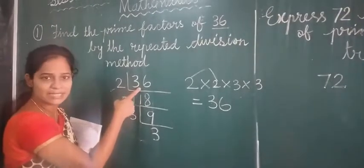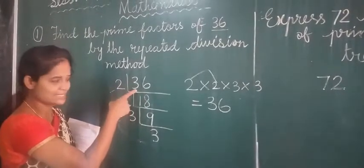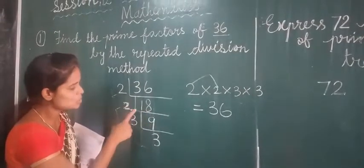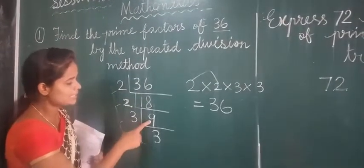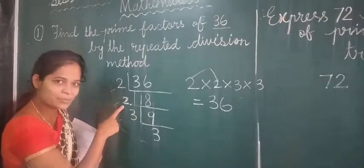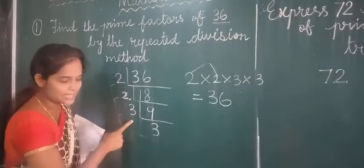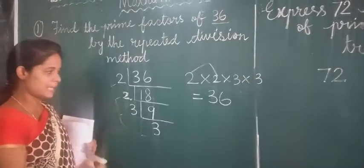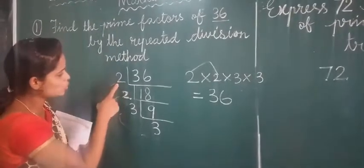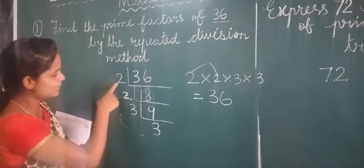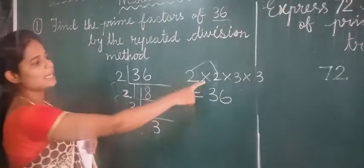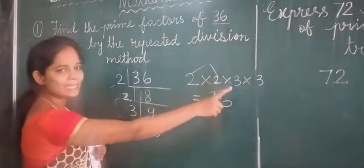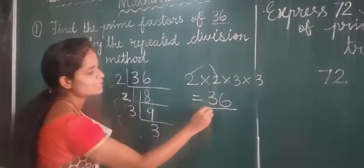How many 2s are in 36? 18 2s are 36. How many 2s are in 18? 9 2s are 18. In 9, we cannot use second table, so we are using third table. How many 3s are there in 9? 3 3s are 9. And then finally, you have to write the numbers, the tables that we used. Write it separately and multiply and see, you will get what? 36.